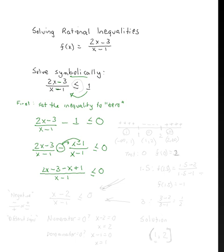Combining our like terms, 2x minus x will yield x, negative 3 plus 1 is negative 2, so x minus 2 over x minus 1. When is this less than or equal to 0?